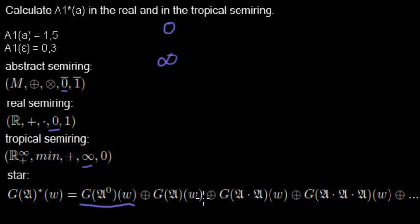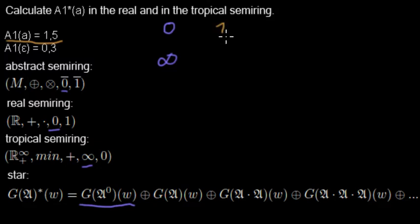So the neutral element is zero for the real semi-ring, and infinity for the tropical semi-ring.